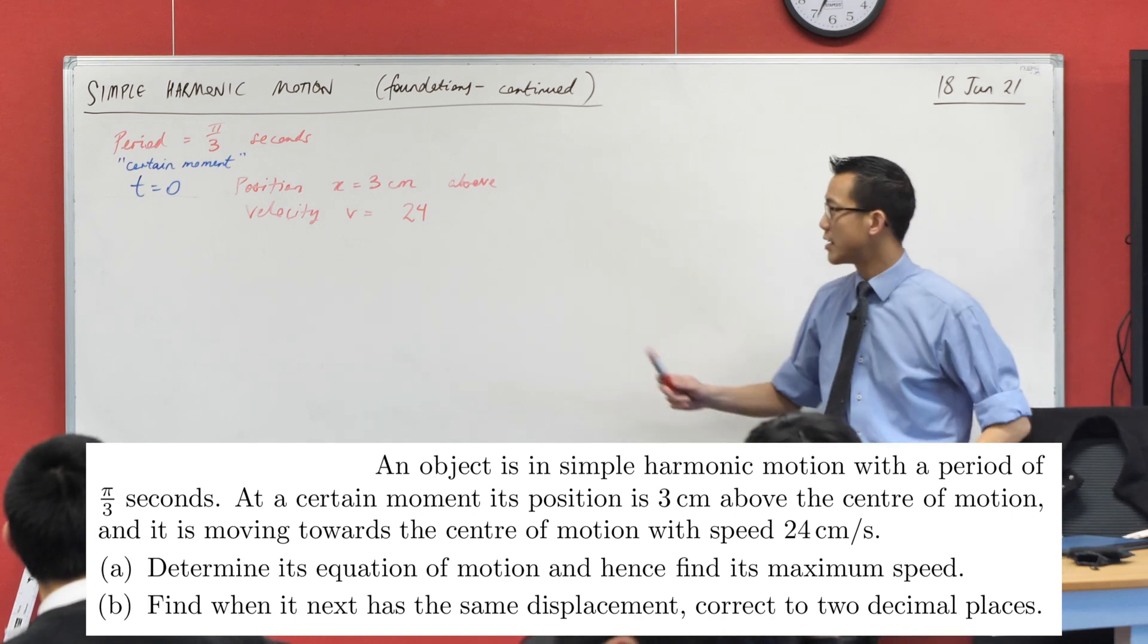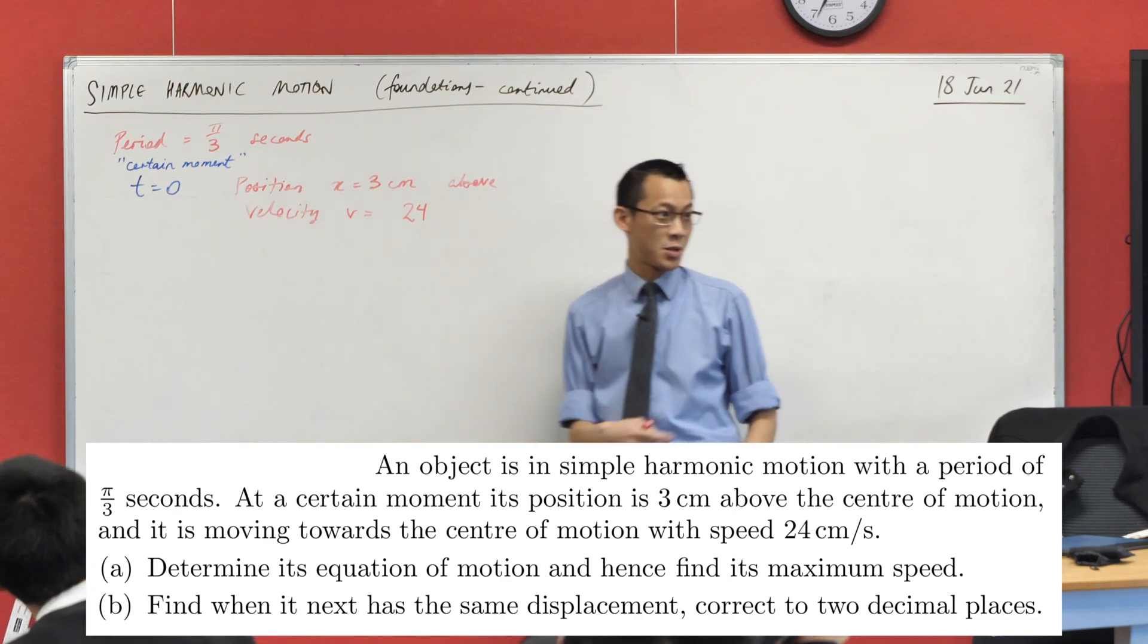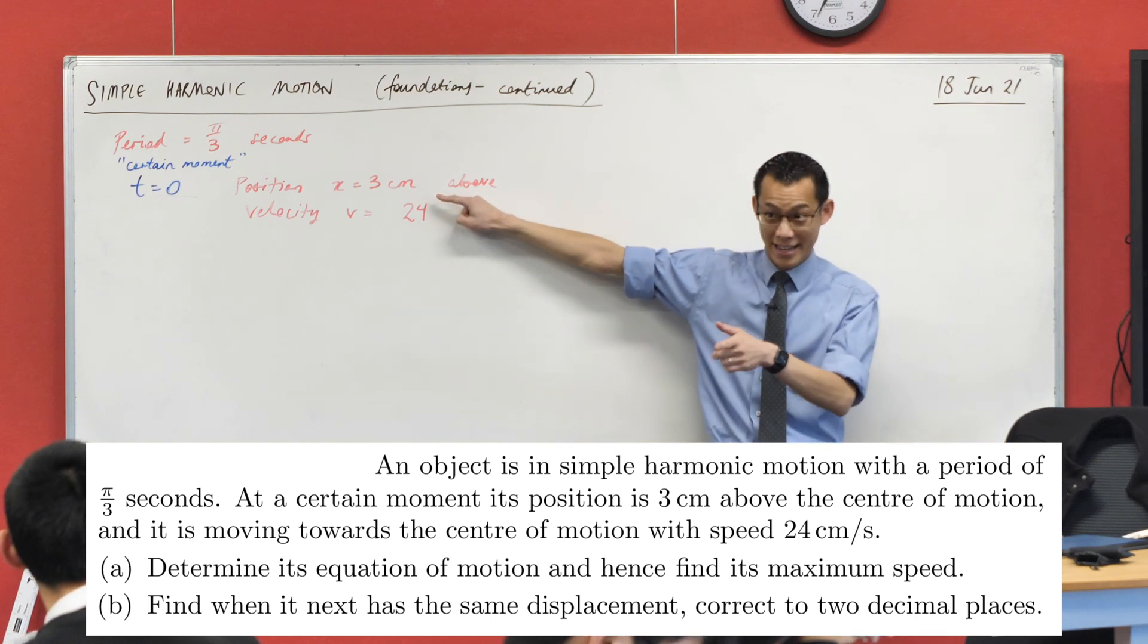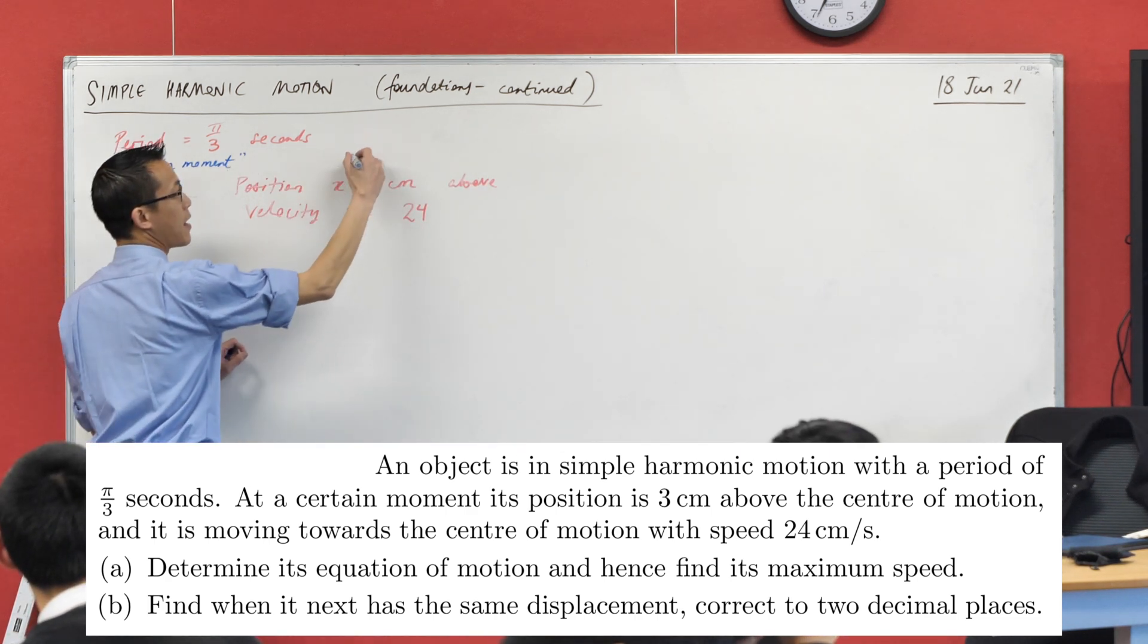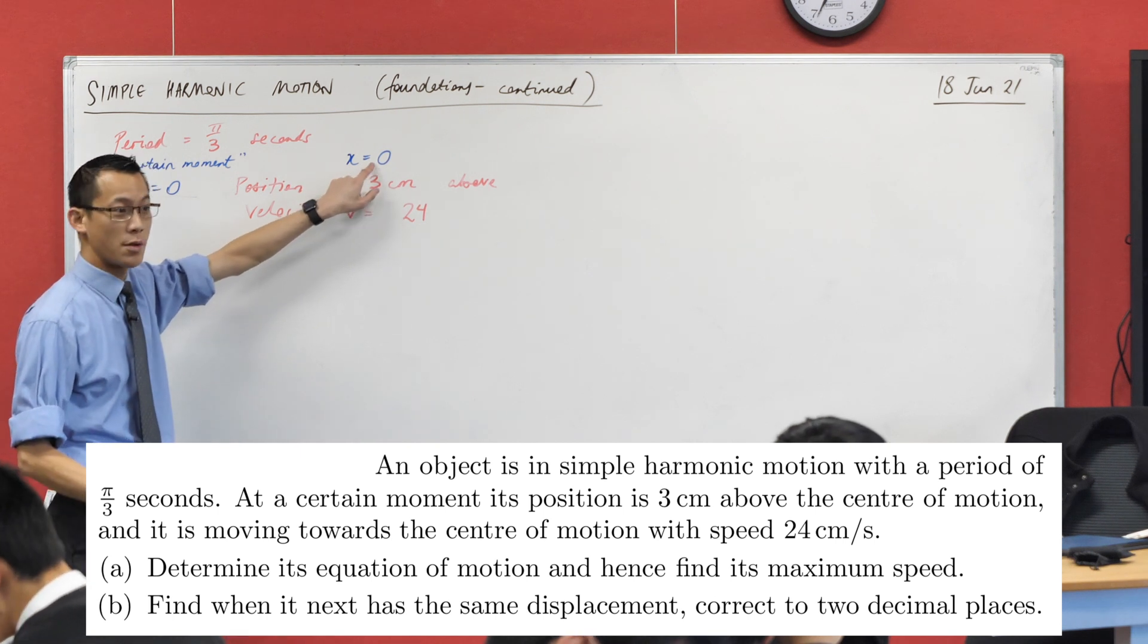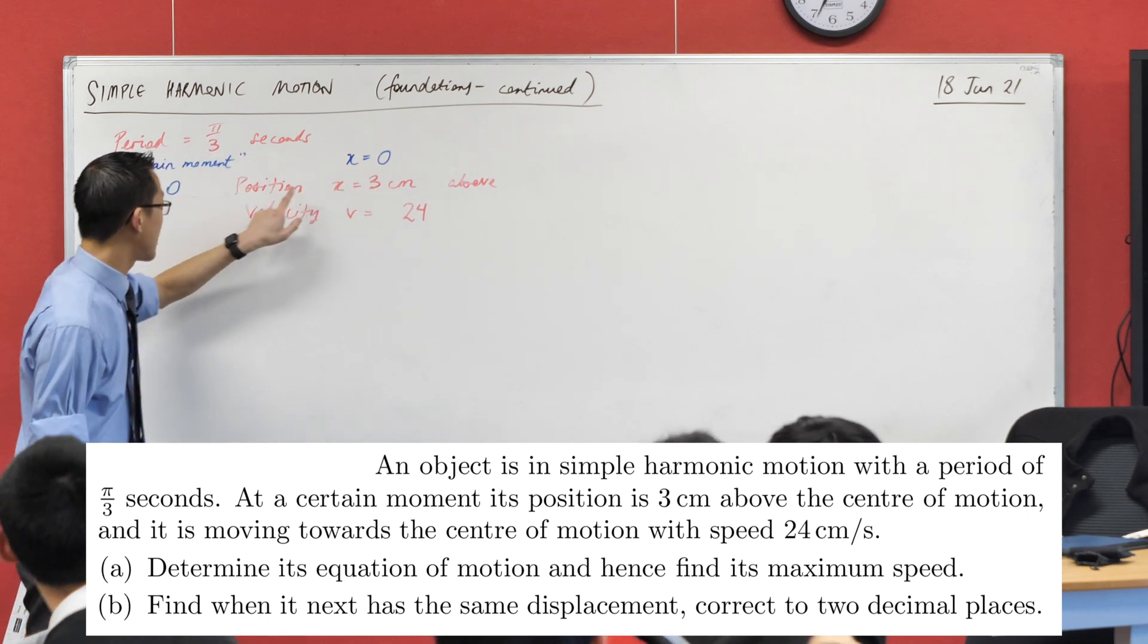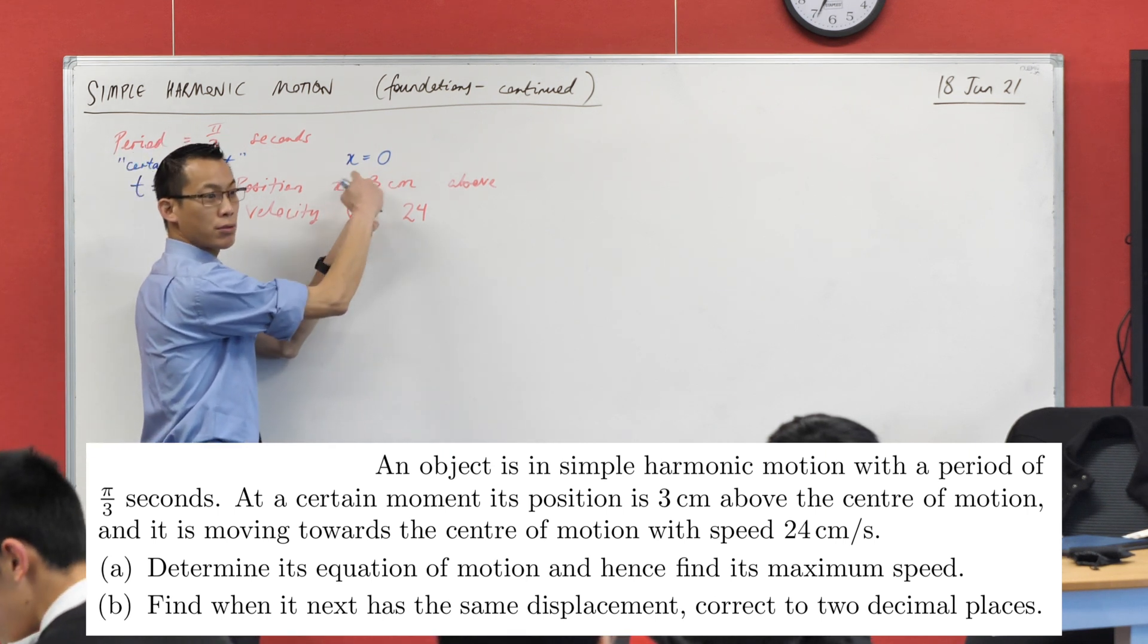It says three centimeters above the center of motion. I actually kind of sneakily said x equals three here. That gives us another thing. That tells us about the center of motion. They didn't specify it. I kind of have implied it. Where is my center of motion if at this certain moment I'm at x equals three? It's exactly going to be x equals zero, because if this is three centimeters above, then x equals three makes the center of motion at x equals zero.